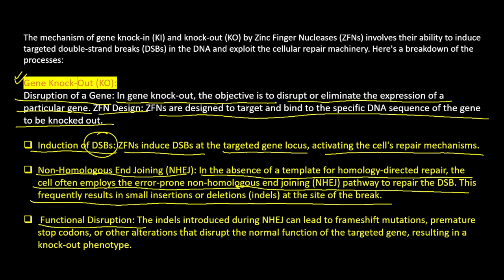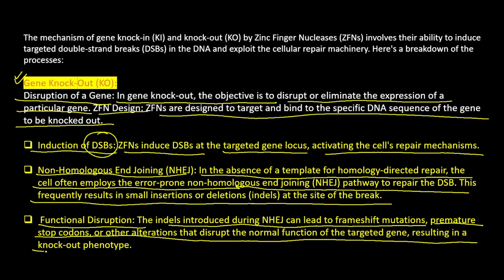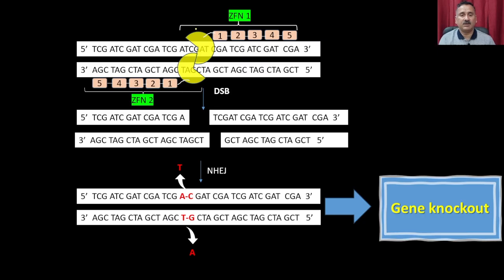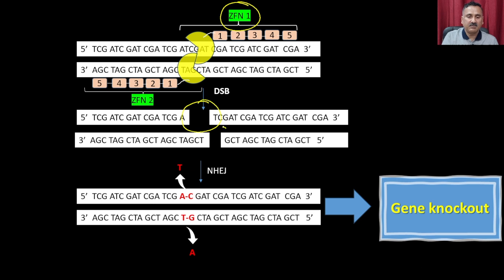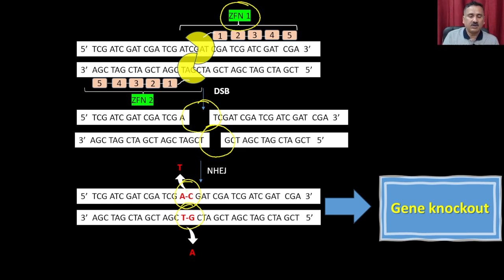This results in functional disruption. The indels introduced during NHEJ can lead to frameshift mutations, premature stop codons, or other alterations that disrupt the normal functioning of the target gene, resulting in a knockout phenotype. The zinc finger nuclease recognizes a specific DNA sequence, introduces a double-stranded DNA break, and those breaks are filled with a random sequence causing frameshift mutations and deletions, making the gene non-functional.